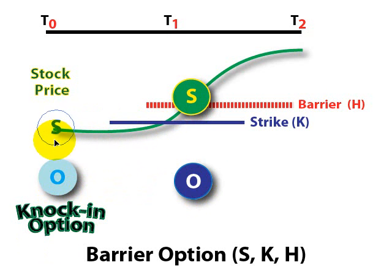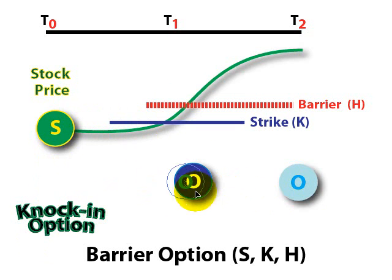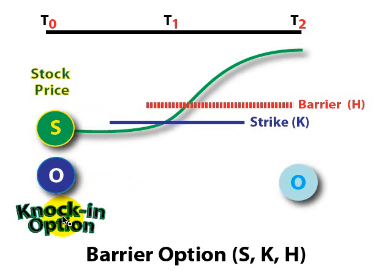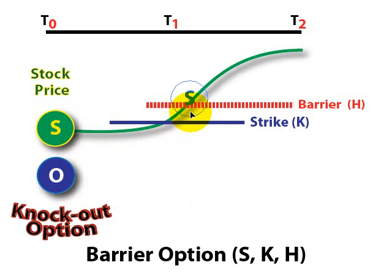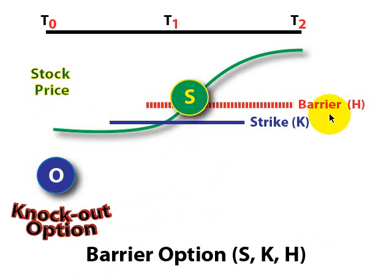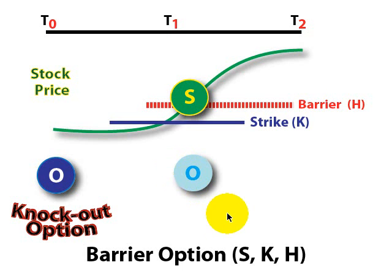Now, if we put the stock back and instead start with the option already in existence, we could have a knock-out option. We still have a barrier level and a strike price associated with the option. But this time, if the stock goes forward in time and increases and breaches the barrier level given by H, the stock option is knocked out of existence because it crossed the barrier. You can see why this knock-out option is definitely cheaper than the analogous regular call option.